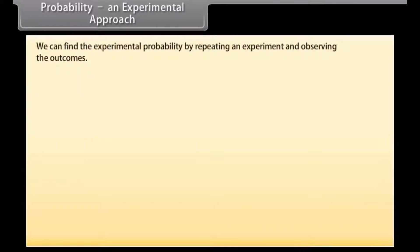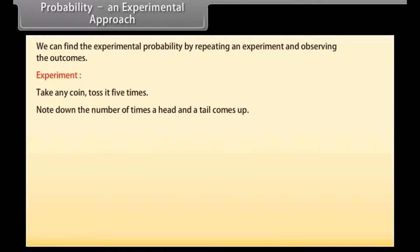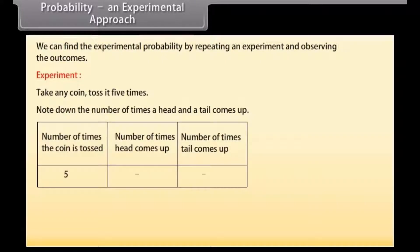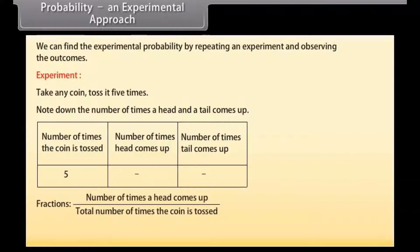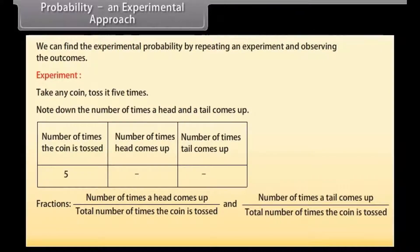Probability — an experimental approach: we can find the experimental probability by repeating an experiment and observing the outcomes. Let's do an experiment. Take any coin, toss it five times, note down the number of times a head and a tail come up and fill the given table. Then write the fractions: first, number of times a head comes up upon total number of times the coin is tossed.